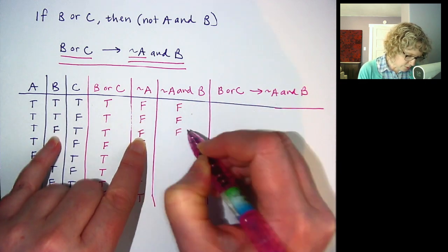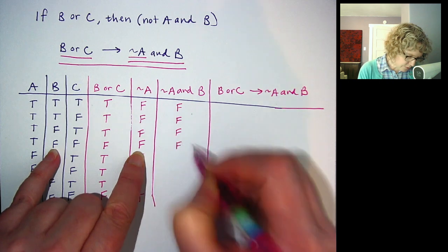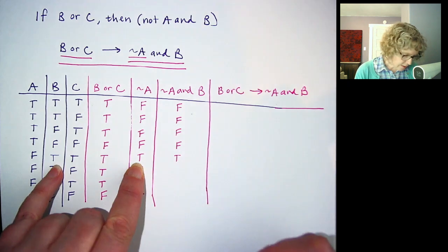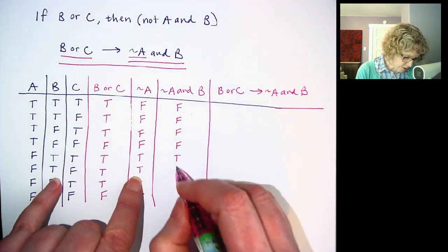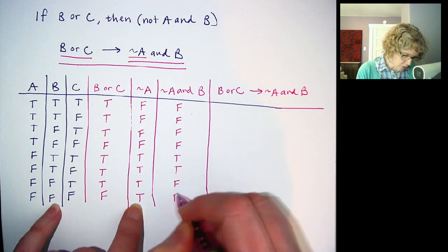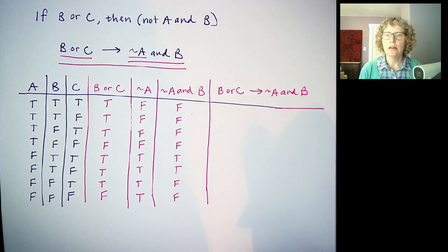They're not both true. They're not both true. They're not both true. They're both true. That's the only time the and will be true. We have another true, false, and false. Okay.